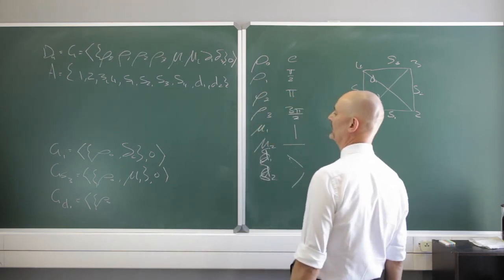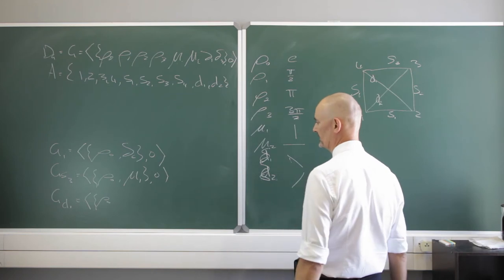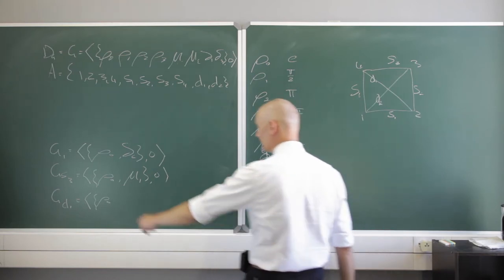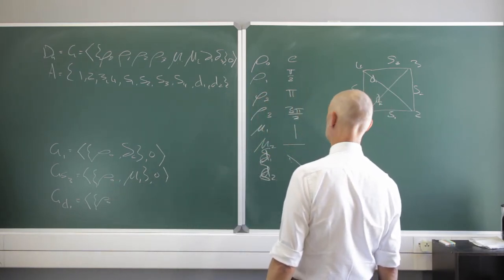And so I have an identity element. Those two will be the inverses of each other. Let's just look at, well, this one is its own inverse and that's its own inverse.